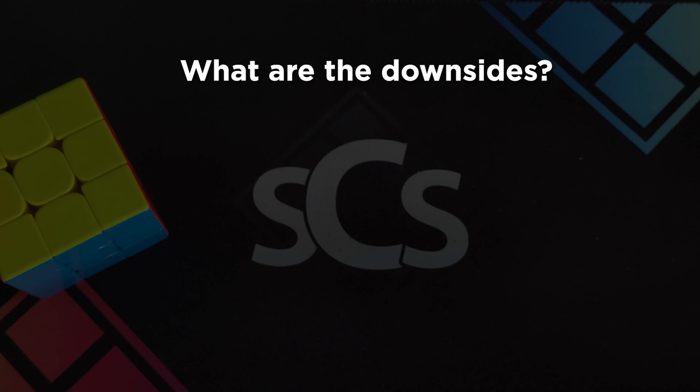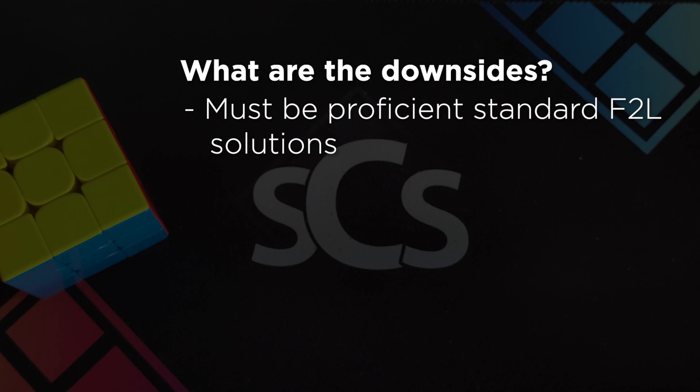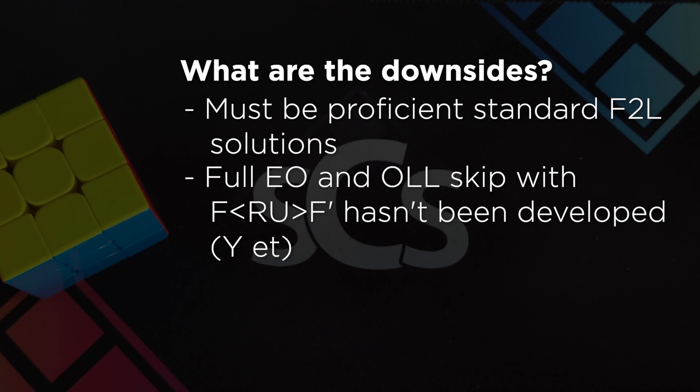So what are the downsides? You will need to be proficient with your standard F2L solutions in the first place. This is not a magic bullet to instantly be able to be sub x seconds. Full edge orientation can be difficult, not good for ZBLL enthusiasts, although for standard OLL and PLL last layer solvers, the partial EO can be helpful, especially if you don't like dot OLL cases, although I highly advise you do learn them still.